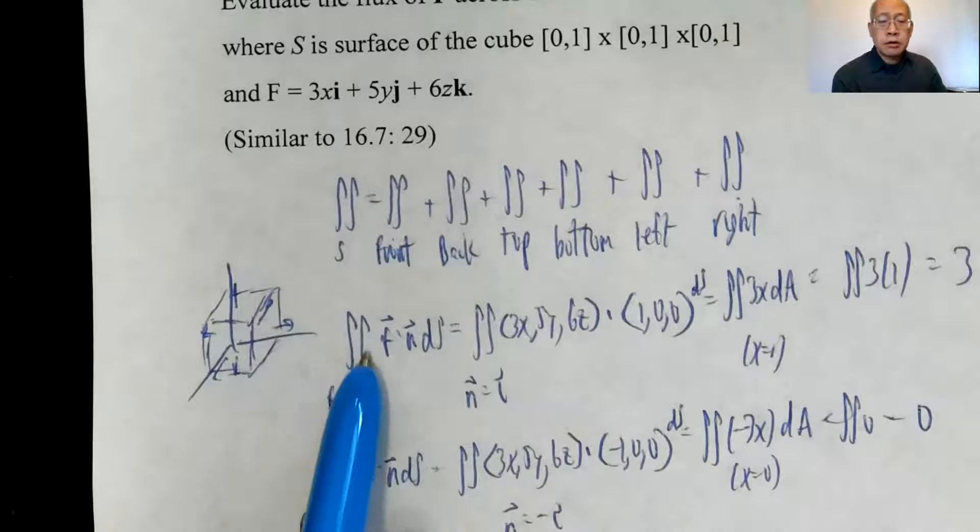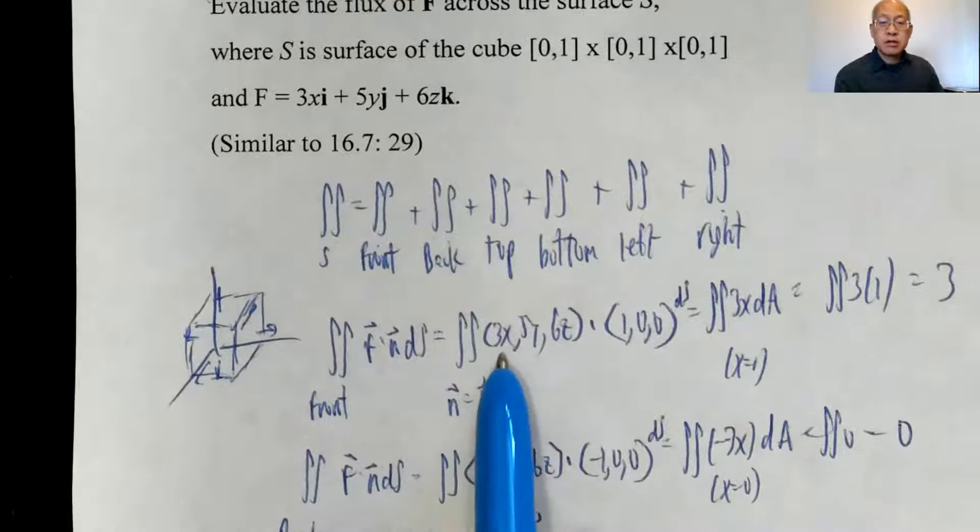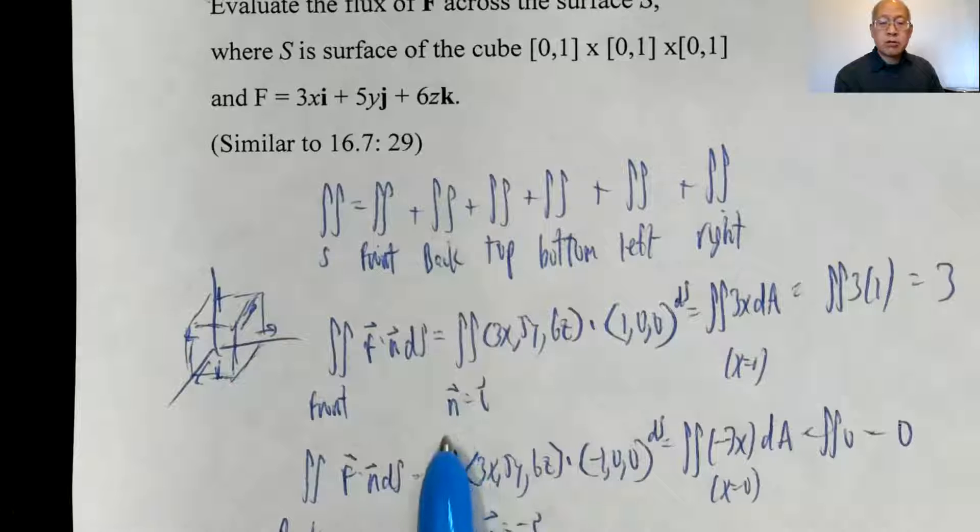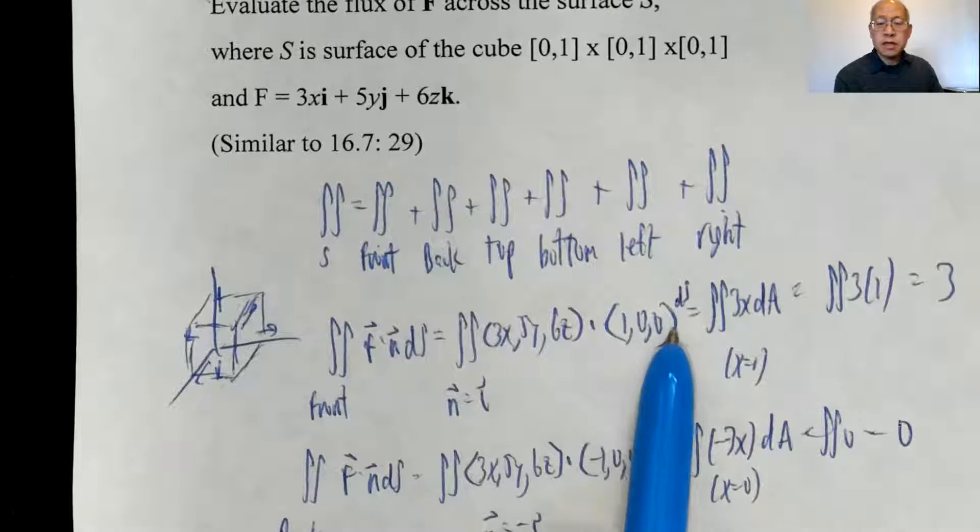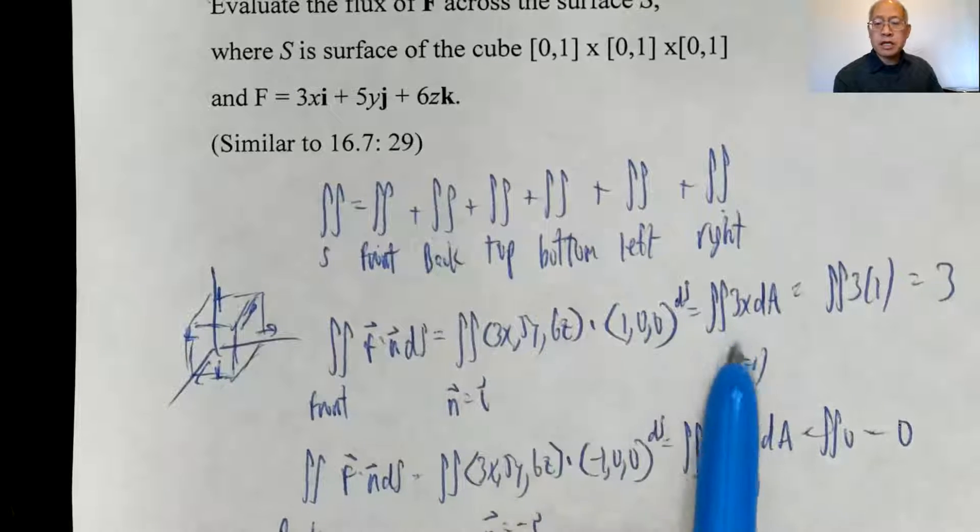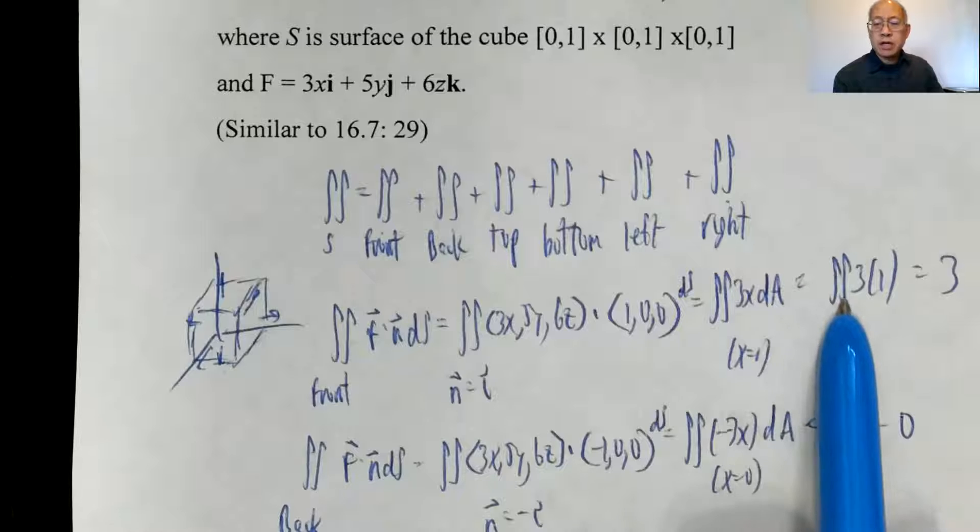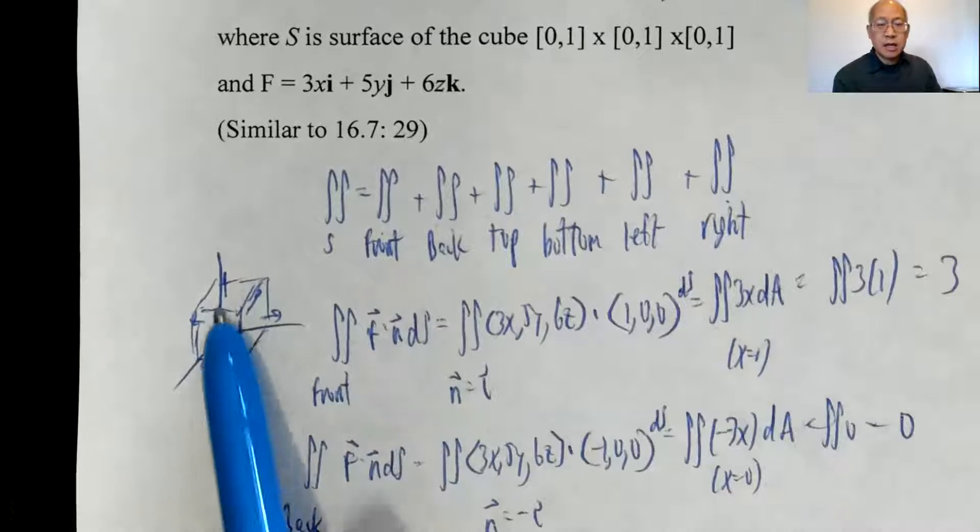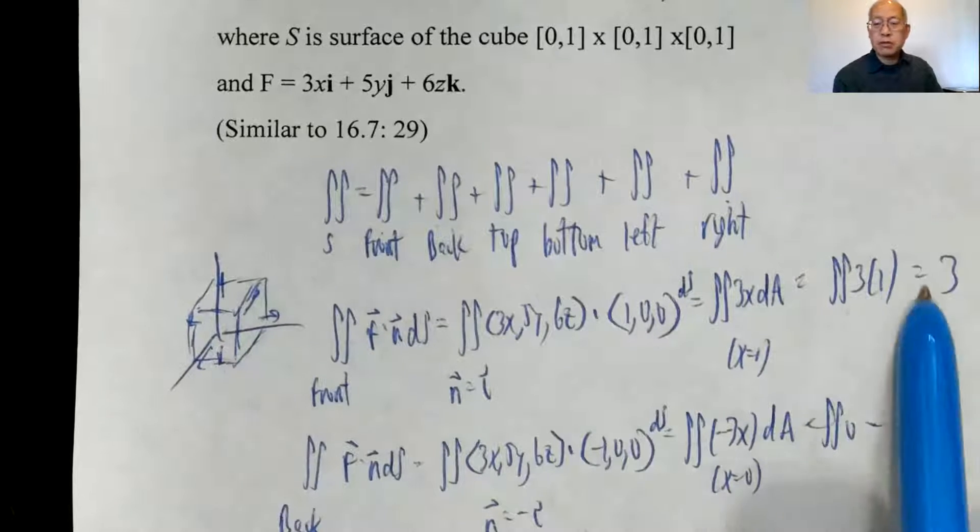Front: double integral of F dot n ds. So here's the original F, the normal vector is i, that's (1, 0, 0), ds. The dot product is 3x, but the front is x equals 1, so 3 times dA. dA is 1 by 1, so 3 times 1 or 3.